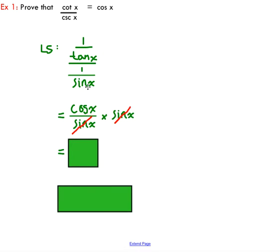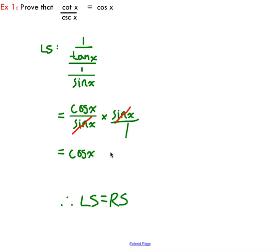So you can see that I changed my expression into sine and cos, and conveniently enough, I can cancel out these sine expressions. This sine is over 1, so I can cancel those guys out nicely, and I'm left with just cos.